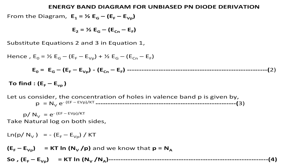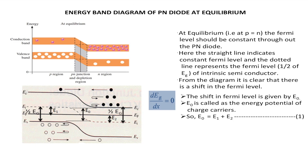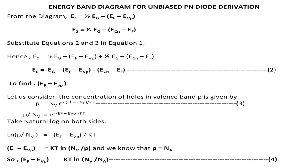From the diagram, you can see E0 is written as E1 plus E2. Now I want to find out the value of E1. We know the intrinsic semiconductor occupies half of the energy gap in our energy band diagram. Half of the energy gap is nothing but the middle of our energy band diagram, since the energy gap is defined as the difference between the conduction band and the valence band. So we can find the E1 value as half of EG minus the difference in the energy level, where the difference is given by EF minus EVP. Here EF is the constant Fermi level line and EVP is the valence band energy level of the P type material. So we can write E1 equal to half EG minus (EF minus EVP).